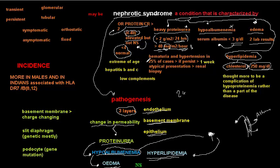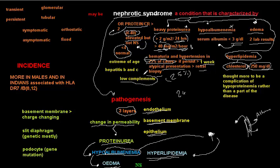In 25% of cases of nephrotic syndrome, we may also have hematuria and hypertension — this is atypical, since hematuria usually belongs to nephritic syndrome, not nephrotic. If hematuria and hypertension exceed one week, it is an atypical presentation and you should take a renal biopsy. Other atypical features include low complement (C3 and C4), hepatitis B and C, and extremes of age.